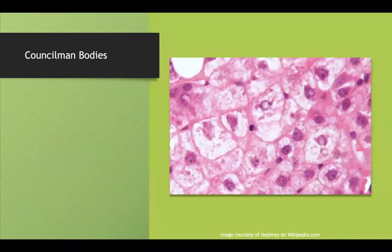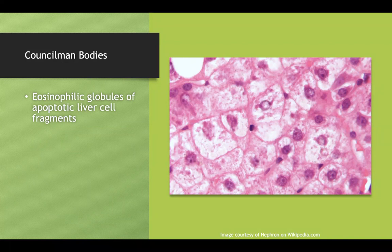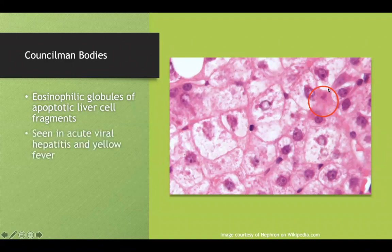Viral hepatitis can also cause Councilman bodies — eosinophilic globules of apoptotic liver fragments. The liver cell knows it's infected and performs controlled cellular apoptosis in an organized manner. You can see this as a pink-stained cell gradually dying. You'll see Councilman bodies mostly in viral hepatitis, but also in yellow fever.